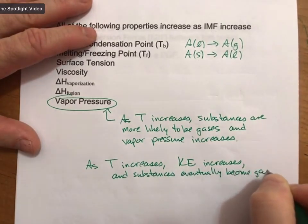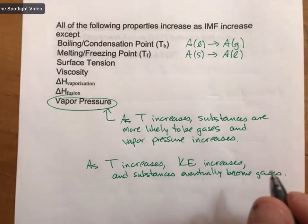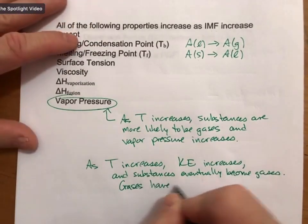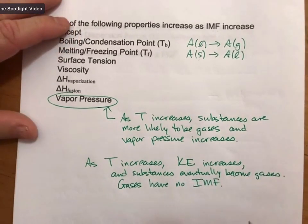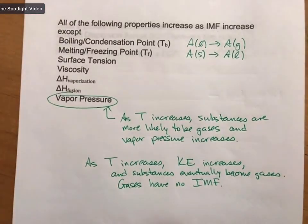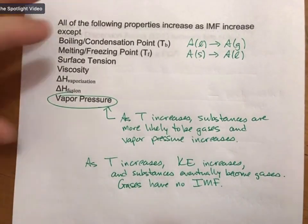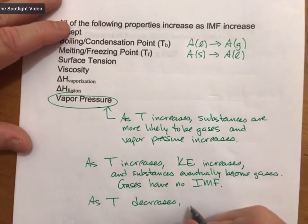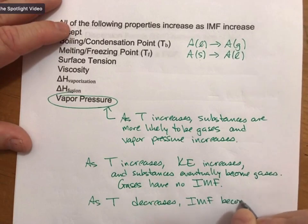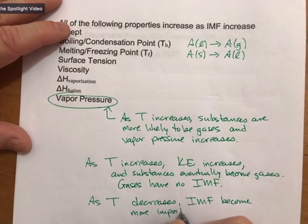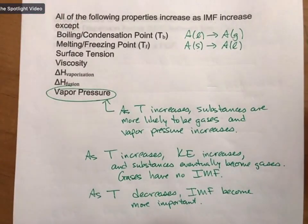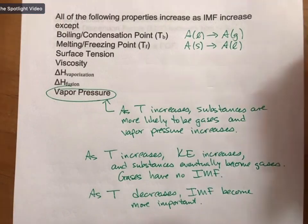We know that gases have no intermolecular forces, or negligible intermolecular forces. So as temperature increases, eventually everything becomes a gas and intermolecular forces become irrelevant. As temperature decreases, IMF become more important, and almost every substance we know of will become solid because the IMF are strong enough to hold them in the solid phase.